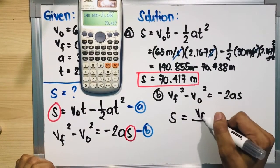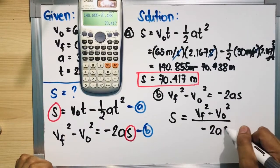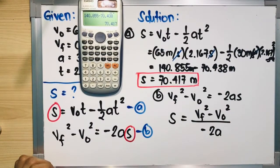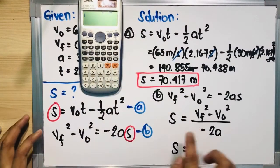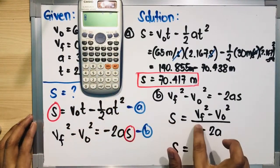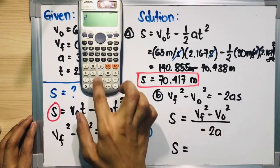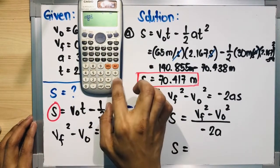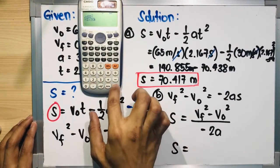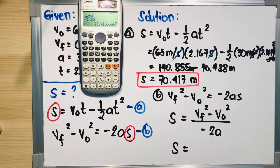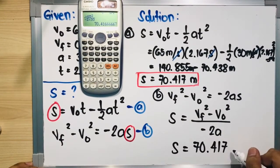Distance is what we're looking for, therefore we can use the calculator method this time. The equation becomes s equals vf squared minus v₀ squared divided by negative 2a. Using this specific formula, vf is zero so that's zero out, minus v₀ squared which is 65 squared, in the denominator you have negative 2 multiplied by your acceleration which is 30. And there you are, same solution or same answer which is 70.417 meters.